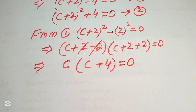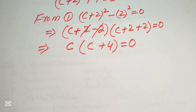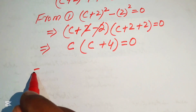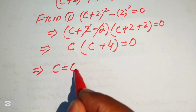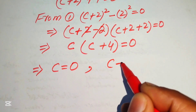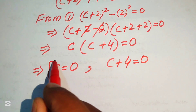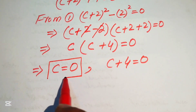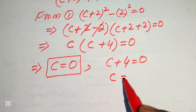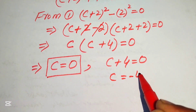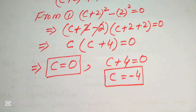Converting into two cases: the first gives C = 0, which is the first root of the equation. The second case, C + 4 = 0, gives C = -4, which is the second root of the given equation.